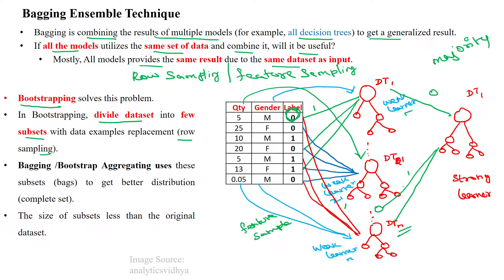Sample number 1 is predicted as zero by weak learner 1, zero by weak learner 25, and one by the Nth learner. We apply majority voting: zero occurs two times, one occurs one time, so the output is zero. You can see that this predicted output matches our actual output.